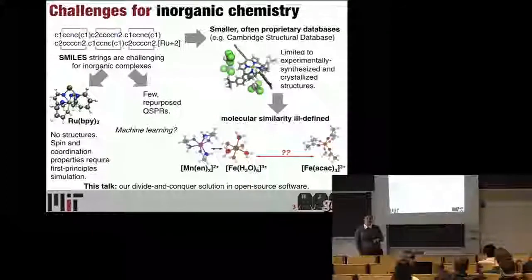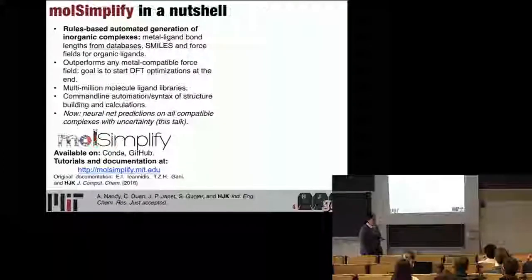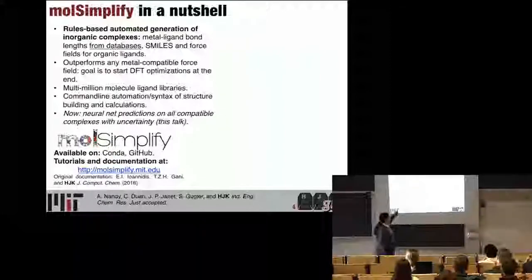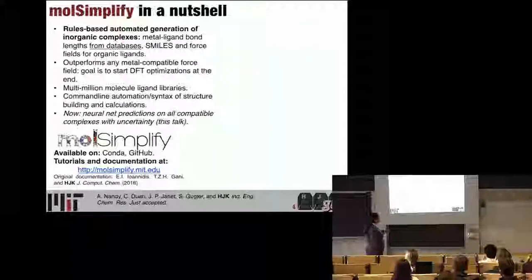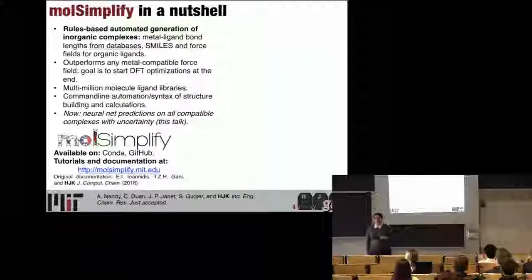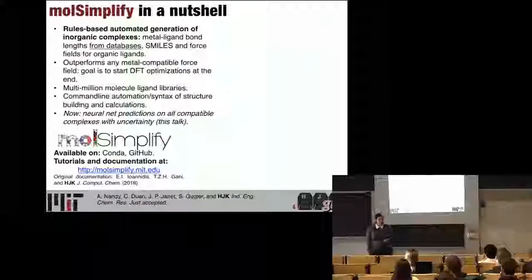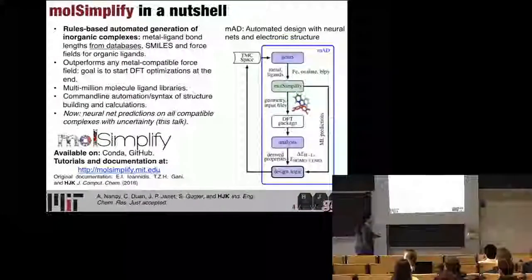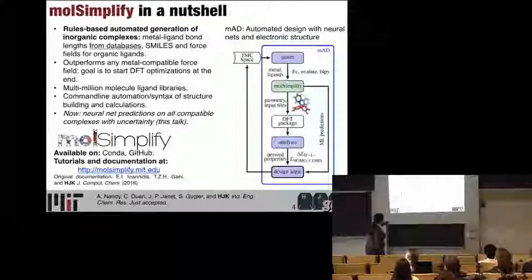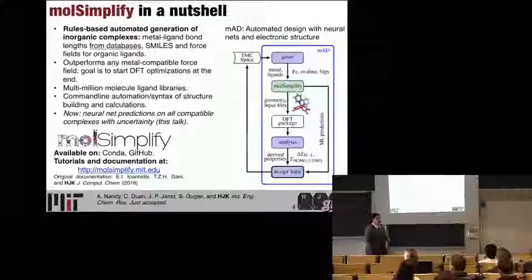We took a divide-and-conquer approach: take everything that worked in organic chemistry, find where it failed for inorganic chemistry, and patch it up. We did this in open source software we call MolSimplify. It does automated generation of inorganic complexes, it outperforms available force fields for getting good starting structures as close to the end of a DFT geometry optimization as possible, it interfaces with multi-million molecule ligand libraries, and it creates a syntax for building molecules and interfacing with them on the command line. We published a paper recently that summarizes MolSimplify Automated Design, a driver for thinking of transition metal complexes in terms of genes, optimizing their properties, and scoring those properties either with a machine learning model or with DFT.